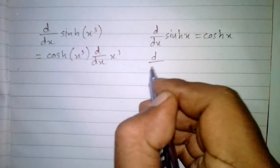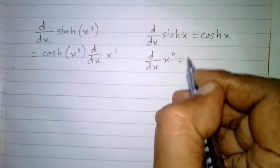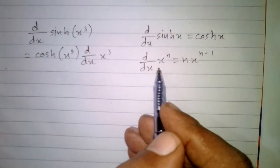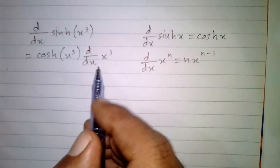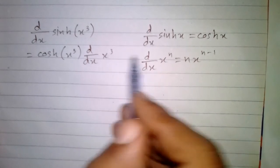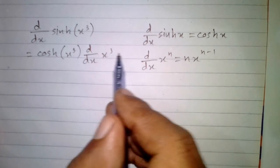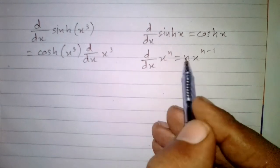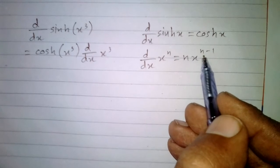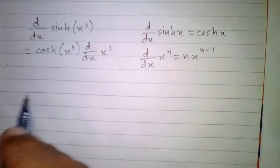Now the derivative of x to the power n is n times x to the power n minus 1. Here we have x to the power 3, so 3 goes in place of n. This 3 will become the coefficient, and we subtract 1 from this 3.